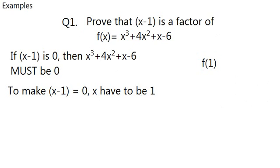And so, we have 1³ + 4 times 1² + 1 - 6, which is 1 + 4 + 1 - 6, which is 6 - 6 equals zero. And that is true.